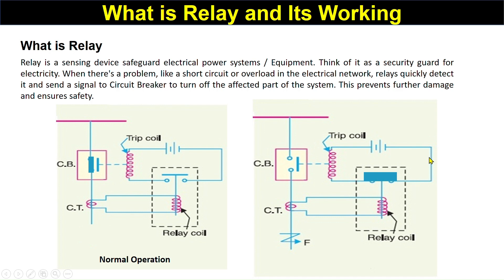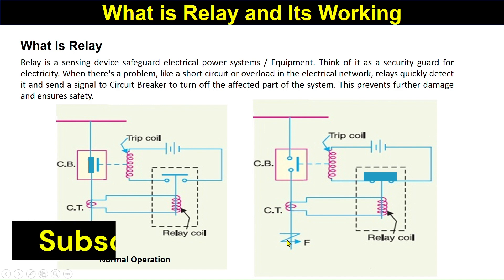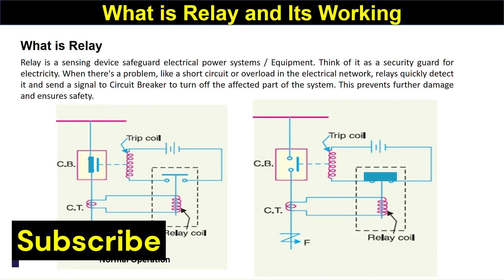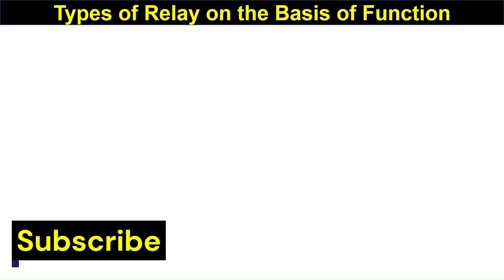When the coil circuit is closed, the current will flow because there is a battery here, and the trip coil gets energized. When the trip coil gets energized, it will pull down and take this connection away from the conductors. That means it will open the circuit breaker. When the circuit breaker is open, this part of the system will be isolated from the supply. This is the simple working of any relay.